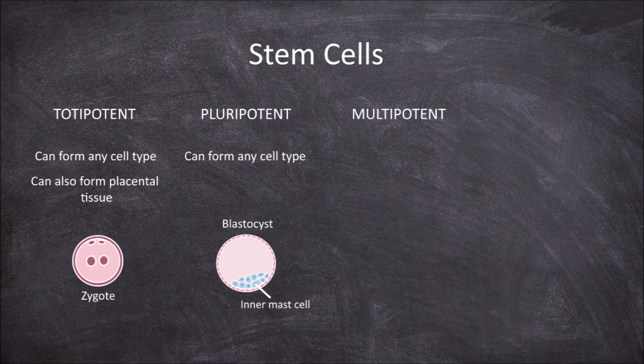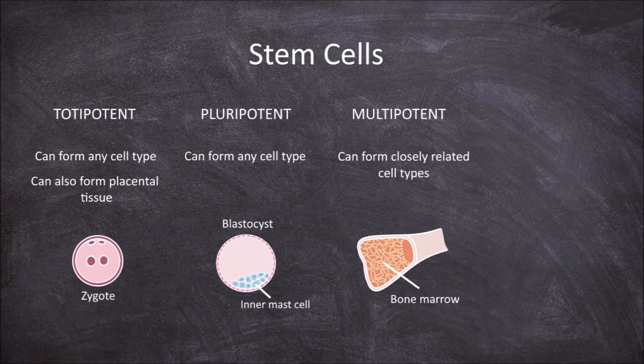Multipotent stem cells are already partially differentiated, but still have the ability to become many closely related cell types. An example of multipotent stem cells are those found in the umbilical cord, as well as stem cells found in the bone marrow. Stem cells found in the bone marrow are able to differentiate into all forms of blood cells, but they are unable to form into any other cell type.